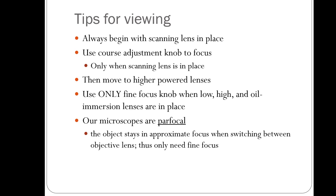When viewing through a microscope, always start with the scanning lens in place. With the scanning lens you can use the coarse adjustment knob for large focus changes. Once you have it in focus and want to move to a higher power lens, switch to the low power lens. When using any lens other than the scanning lens — low power, high power, or oil immersion — only use the fine focus knob. Our microscopes are parfocal, meaning an object stays in approximate focus when switching between objective lenses.